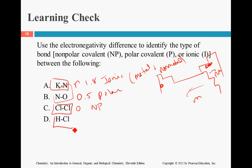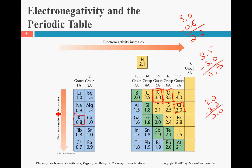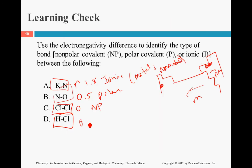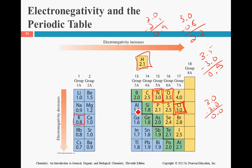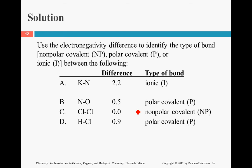And then, finally, HCl. Here's Cl, 3.0. Here's H, 2.1. They're both non-metals, which means it cannot be ionic. It's either polar or non-polar. 3.0 minus 2.1. And that comes out to be 0.9. That is between 0.4 and 1.8, which is making it polar. Those are the answers once again.